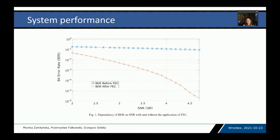The red line shows the bit error rate after error correction. A BER of 10⁻⁴ is achievable with an SNR equal to about 4.2 decibels. But now the big question is: what level of SNR or bit error rate is needed in order to achieve good or acceptable audio quality?